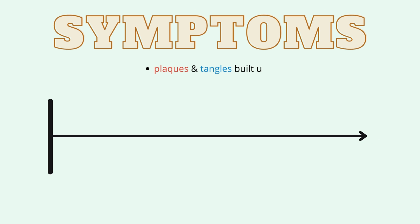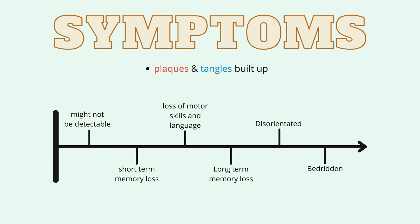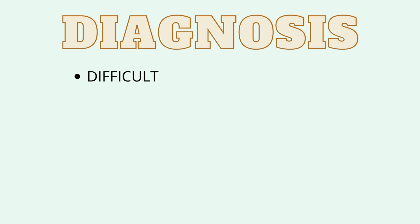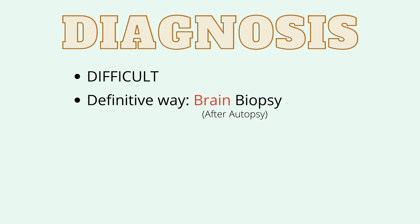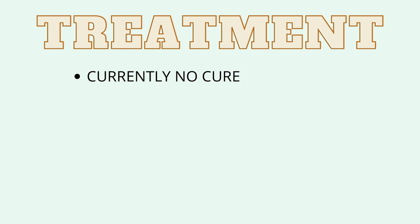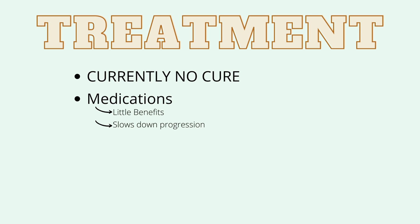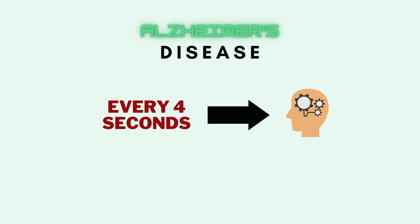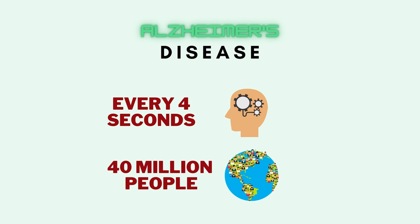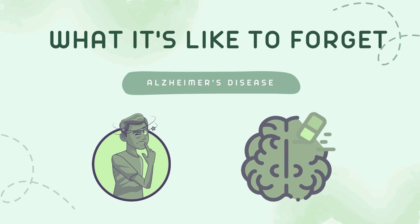Symptoms of Alzheimer's disease worsen as plaques and tangles build up and cause damage to neurons. Symptoms are not detectable during the early stages. As they progress, patients might lose short-term memory, motor skills, and language. Eventually, long-term memory is affected and patients become disoriented and bedridden. Diagnosis is very tough — the only way to provide definitive evidence is by performing a brain biopsy after autopsy. Currently, there is no cure for Alzheimer's disease; some medications exist, but they are aimed at slowing down the progression. Every four seconds, someone is diagnosed with Alzheimer's disease, and being the most common cause of dementia, it affects 40 million people worldwide. Despite being discovered more than a century ago, it is still not very well understood, and finding a cure eludes researchers to this day.